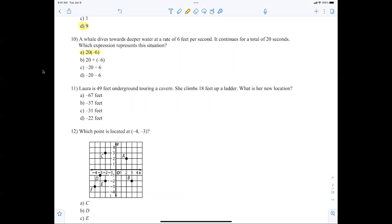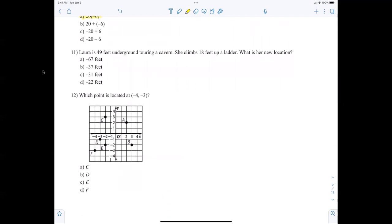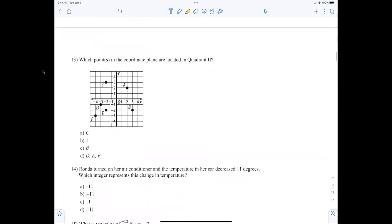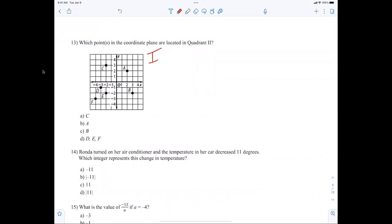Hey, Finley, come on, you guys. I just want you paying attention. All right. Anybody have any issues? All right. Laura is 49 feet underground, touring a cavern. She climbs 18 feet. Where? What is her new location? We agree she's at negative 31. Which point is negative 4 and negative 3? F. All right. Ooh, quadrants. Let's review the quadrants real quick. Quadrant 1. Quadrant 2. Quadrant 3. And quadrant 4. All right. So, quadrant 2 is what? C.